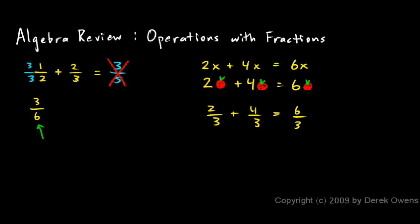This fraction, 3 sixths, 3 over 6, is equivalent to my original fraction, 1 over 2. Now I need to do a similar thing to this fraction here, the 2 thirds. I'm going to multiply it by 2 over 2. And then when I multiply, I have 2 times 2 is 4, and 3 times 2 is 6.